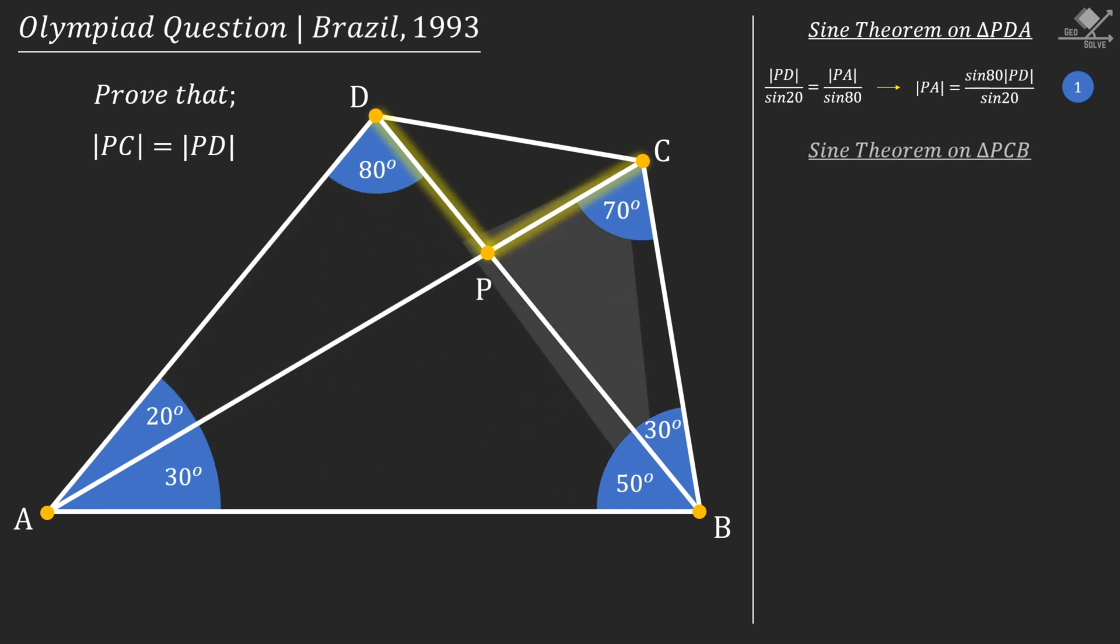This time, apply sine theorem on triangle PCB. From this triangle, we can write PC over sine 30 equals PB over sine 70, and let's write it in this form and call it equation 2.